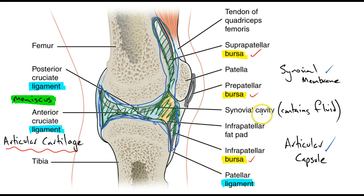The synovial cavity is the area shaded in green that sits within the synovial membrane, and it's that which contains the synovial fluid. The synovial fluid is, for example, like oil within an engine — it helps lubrication, helps movement to occur freely, and decreases friction.